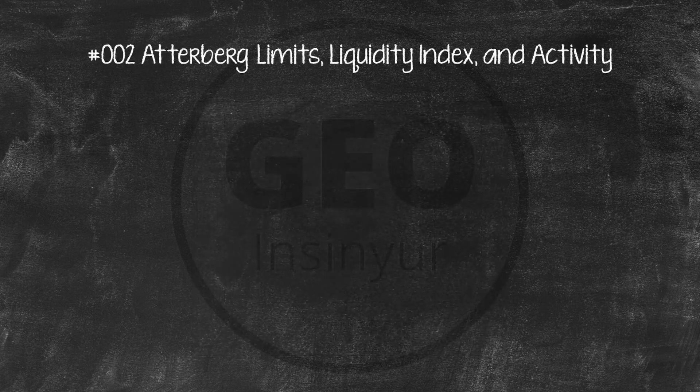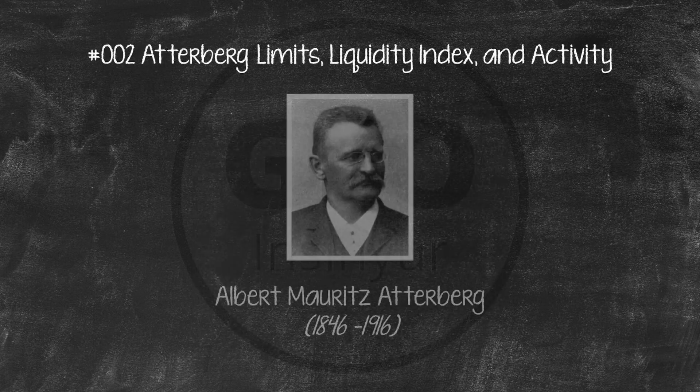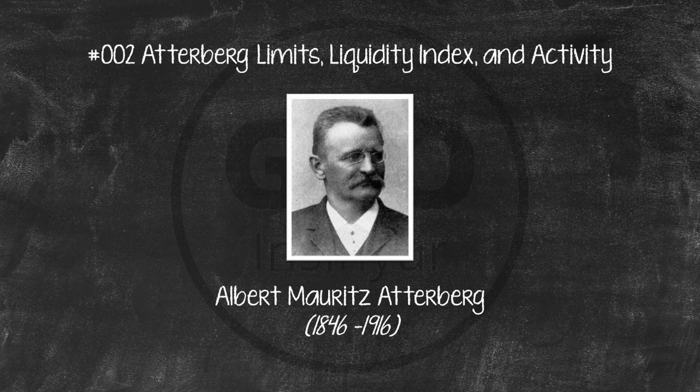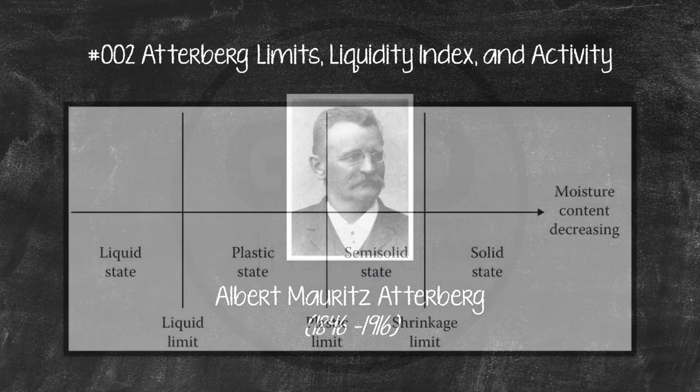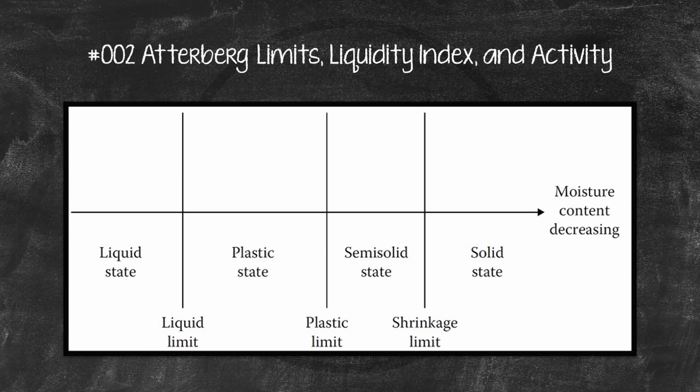In 1911, Albert Atterberg, a Swedish scientist, developed a method for describing the limit consistency of fine-grained soils on the basis of moisture content. These limits are the liquid limit, the plastic limit, and the shrinkage limit.